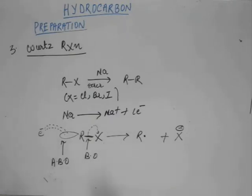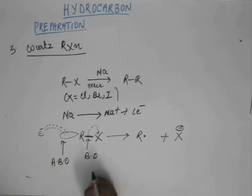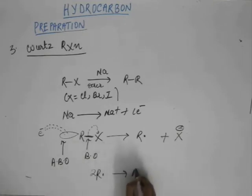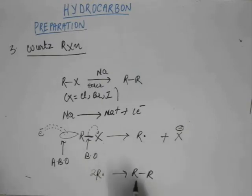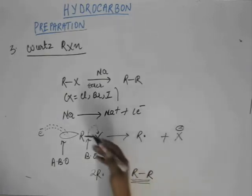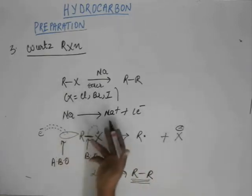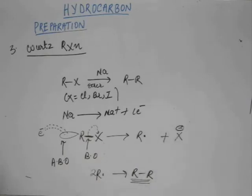Now from here, the path — you know what happens next. If you have R dot, two R dots will dimerize to give you R-R. This is our known path, and this is the final organic product we are interested in. And this X minus will combine with Na plus to give you NaX. This is the final product.